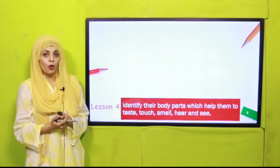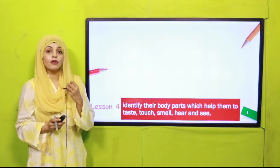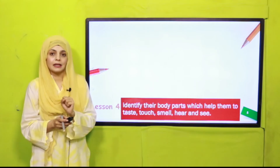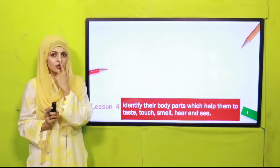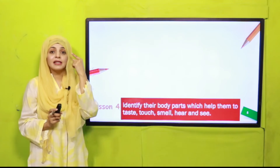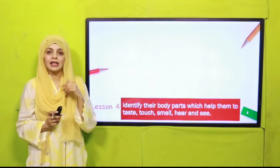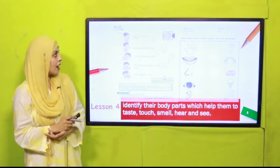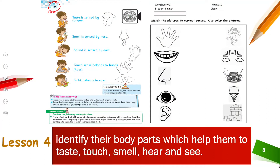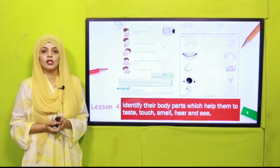In Lesson Number Four, after naming the five senses, you will be able to identify which body parts are used to sense things. For example, we see with our eyes — sight is the sense and the eyes are the sensory part of the body. The pages included are page number 84 and Worksheet Number Two, which is also included in Lesson Number Four.